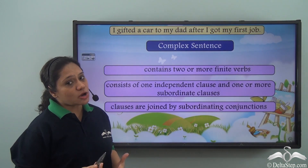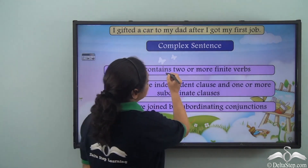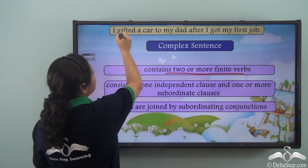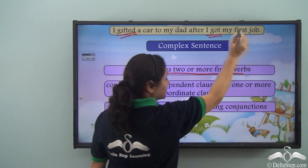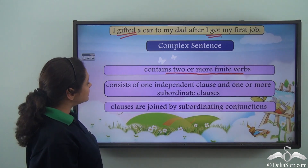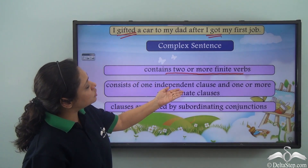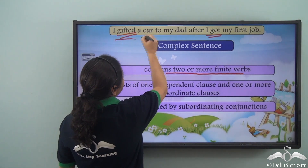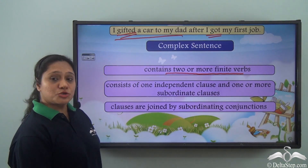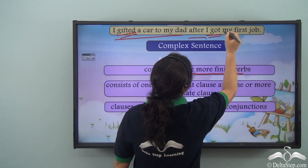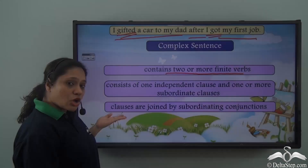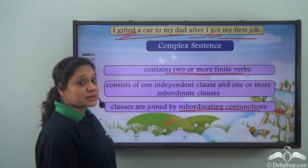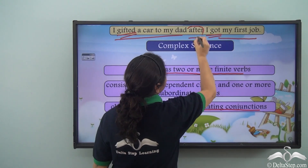So what is a complex sentence? A complex sentence contains two or more finite verbs. It consists of one independent clause and one or more subordinate clauses. The clauses are joined by subordinating conjunctions. In our example sentence, the independent clause is 'I gifted a car to my dad,' the subordinate clause is 'after I got my first job,' and the subordinating conjunction is 'after.'